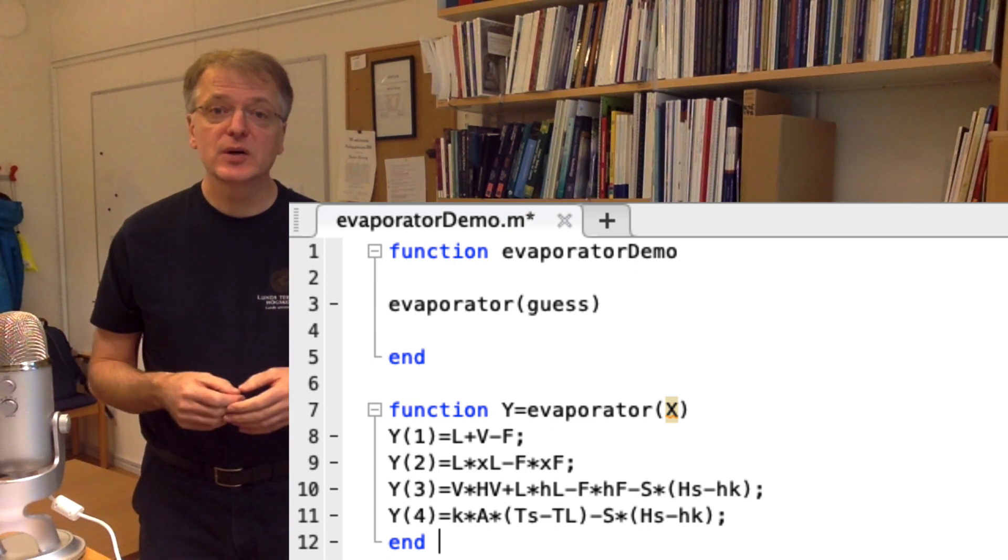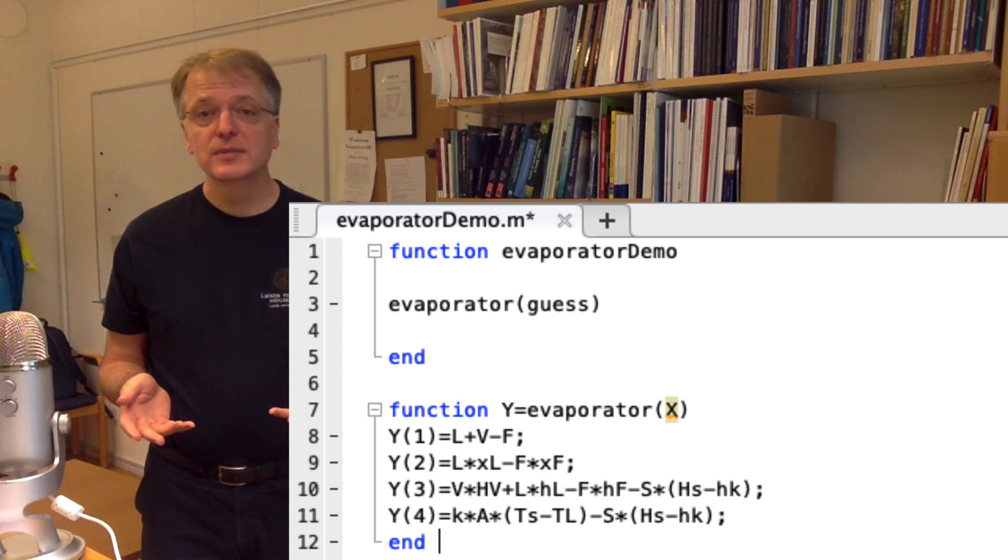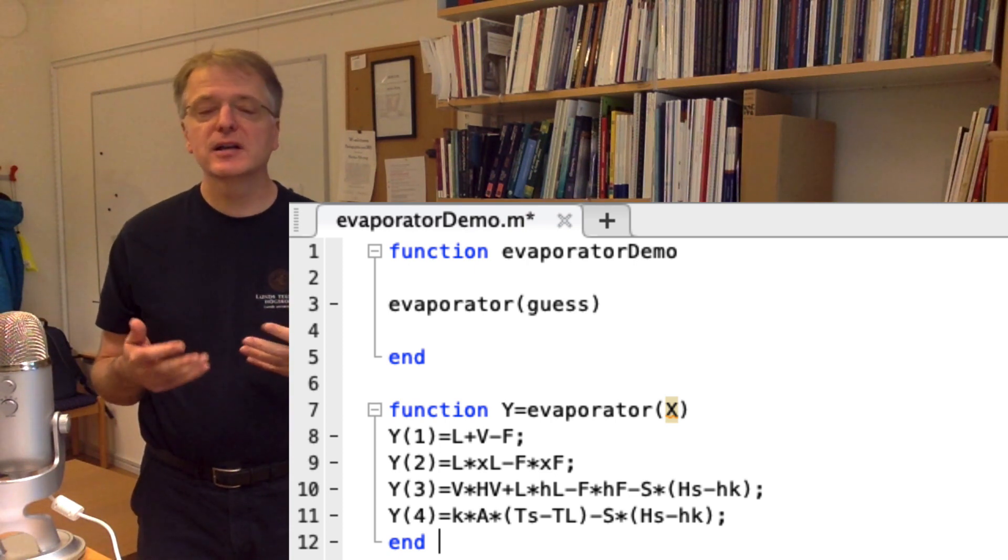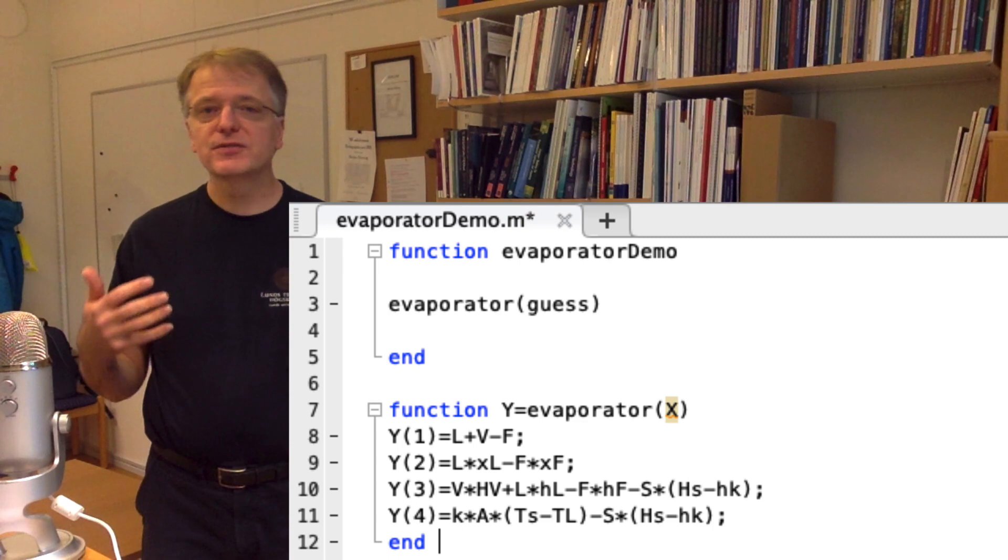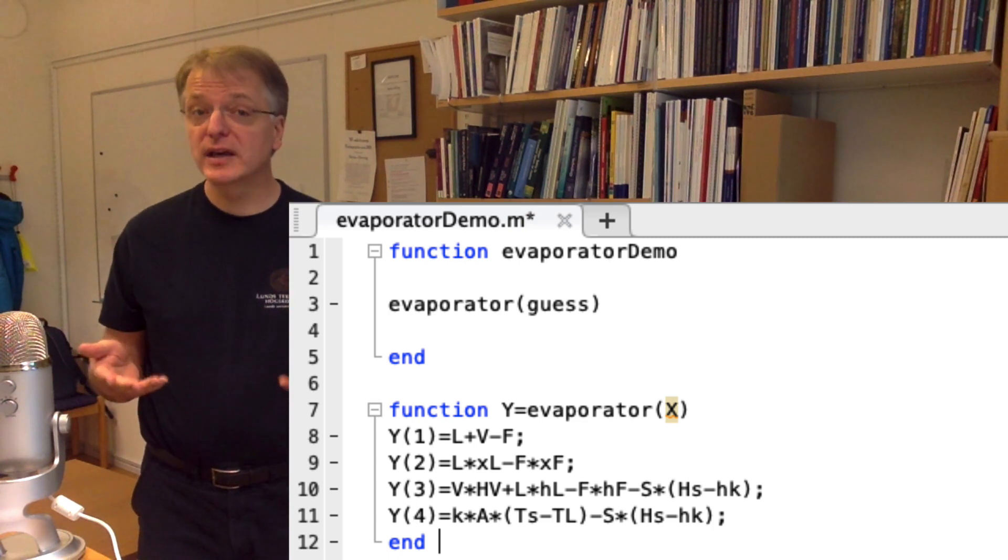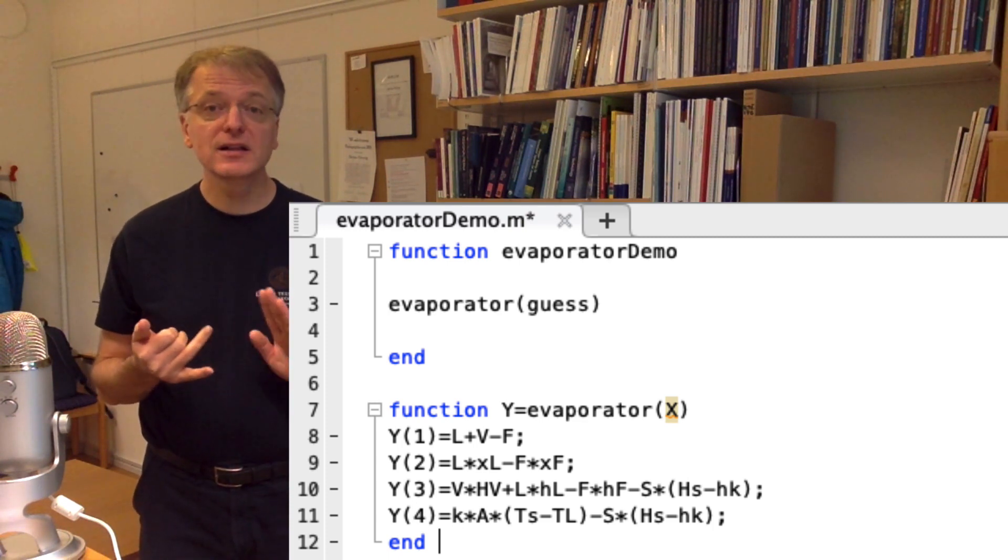There are many ways to carry out the actual programming of this problem. I, however, prefer to use variable names that I can easily understand. Let us therefore translate our argument vector X into variables called L, V, S and A.